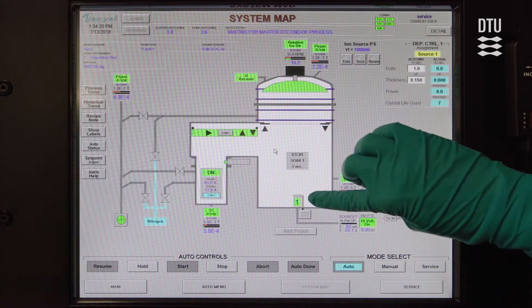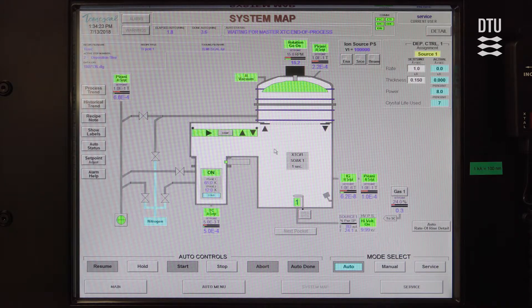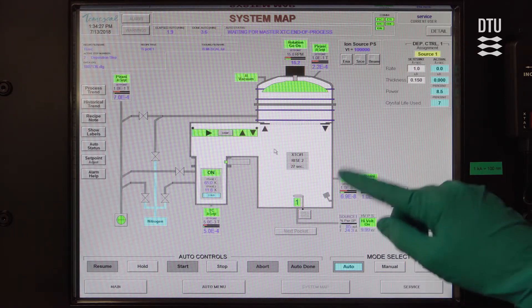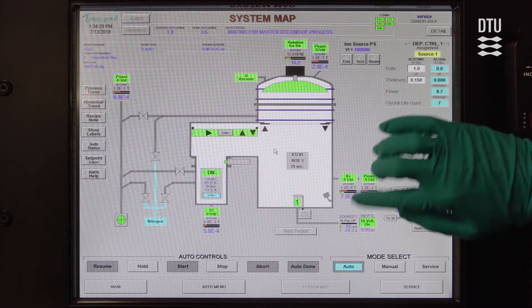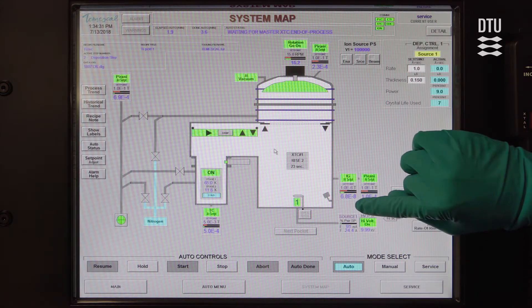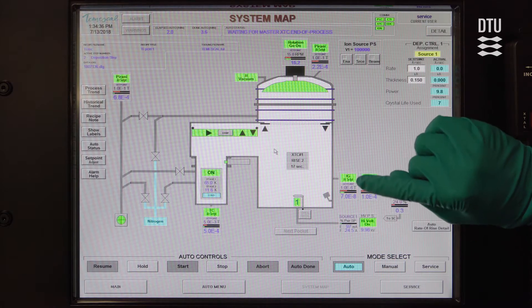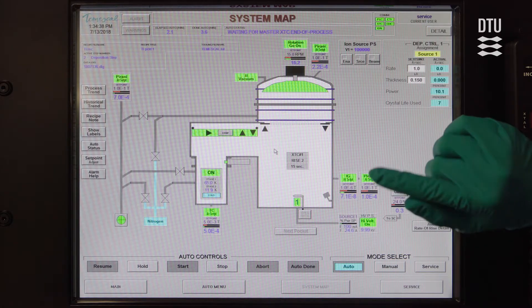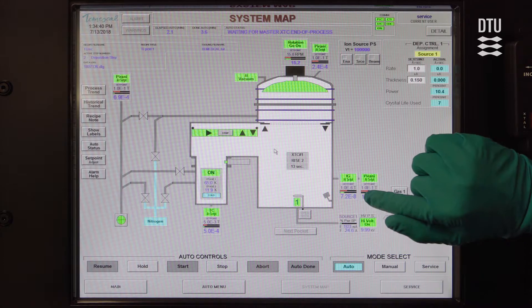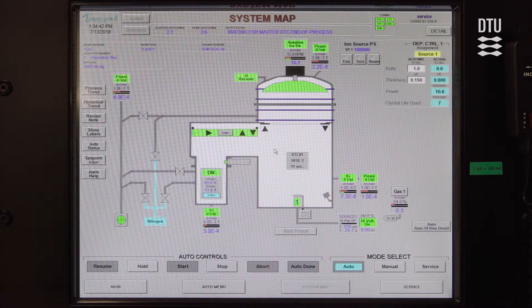You can see that right now the shutter is closed. And already during the rising and soaking, it's a good idea to have a look at what's happening to the pressure. You can see right now we have a wonderfully low pressure. And this is also related to the fact that we are depositing titanium because titanium generally makes the pressure fall. But some other materials do the opposite; the pressure will rise and you need to keep an eye that it doesn't rise too high.